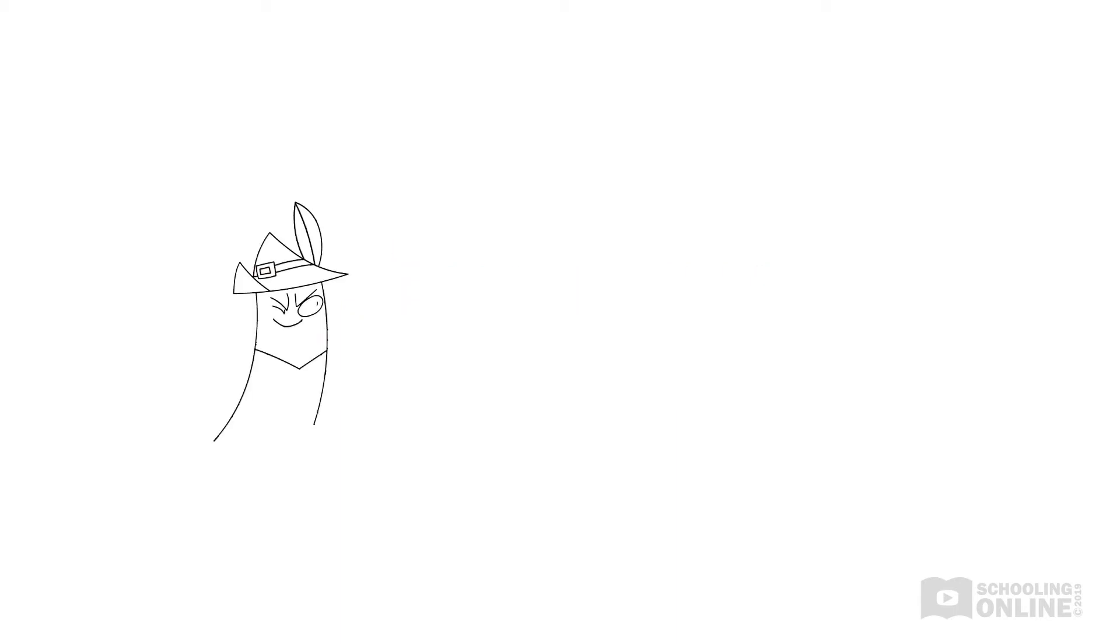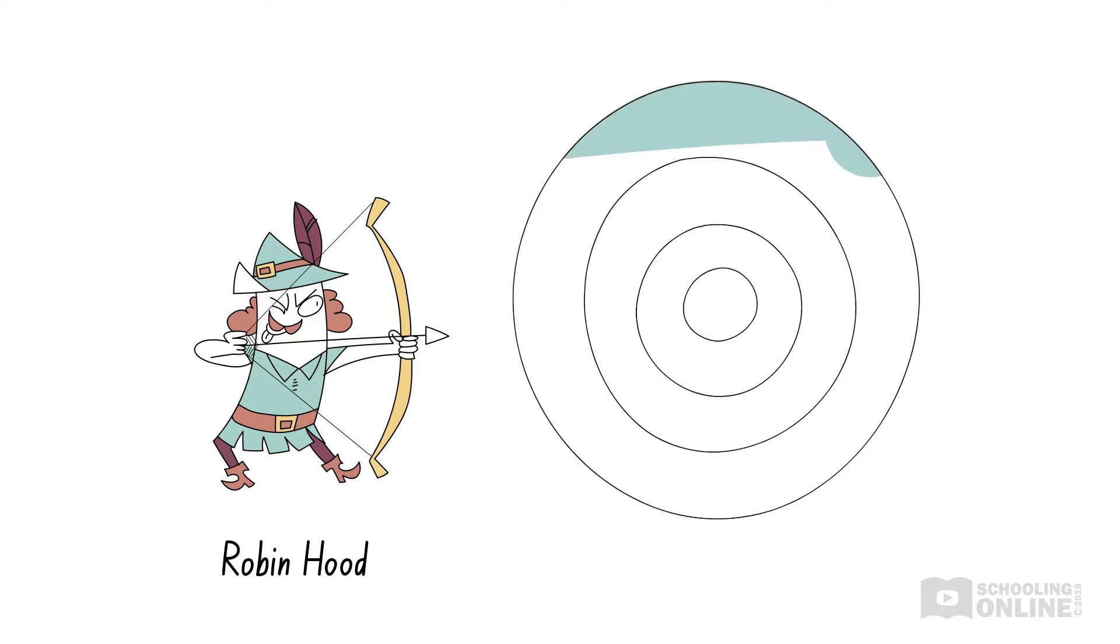Let's return to the example from our first video on reliability. Robin Hood is a superb archer because he consistently hits the bullseye. Even so, his arrows hit a slightly different spot each time. These slight variations in Robin Hood's shots are due to random errors. He is a reliable archer since the size of these random errors is very small.